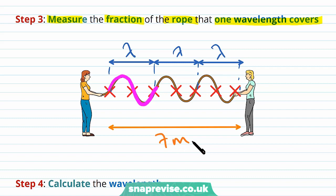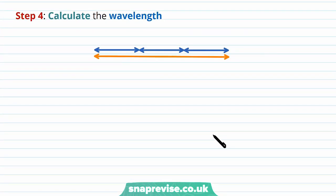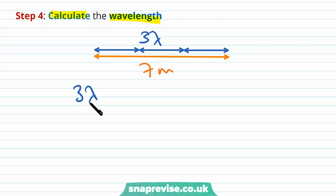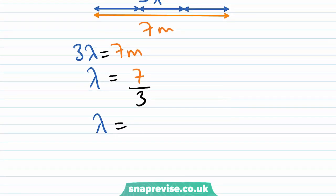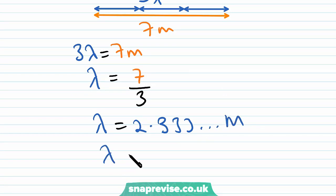We can see that this distance is one wavelength, this distance is one wavelength, and this distance is one wavelength — so there are three full wavelengths across the seven-meter rope. Therefore three lambda equals seven meters, so lambda equals seven divided by three, which gives lambda equals 2.33 recurring meters. To two significant figures, lambda equals 2.3 meters.